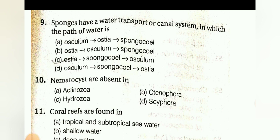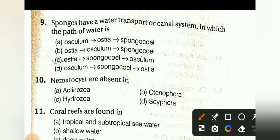Options: osculum-ostia-spongocoel, ostium-osculum-spongocoel, ostia-spongocoel-osculum, or osculum-spongocoel-ostia. The answer is C: ostia → spongocoel → osculum. Nematocysts are absent in: Actinozoa, Ctenophora, Hydrozoa, or Scyphozoa. The answer is B, Ctenophora.